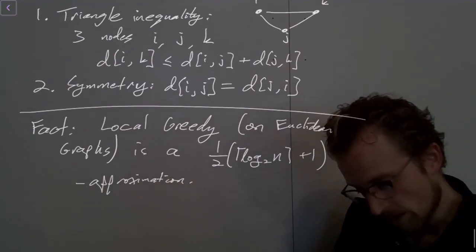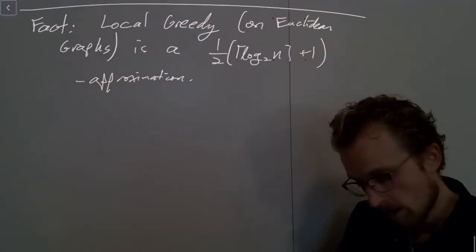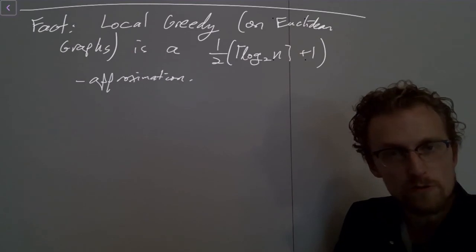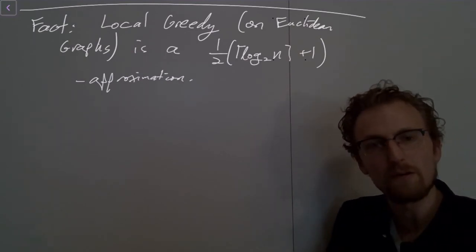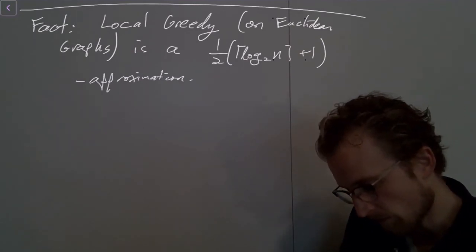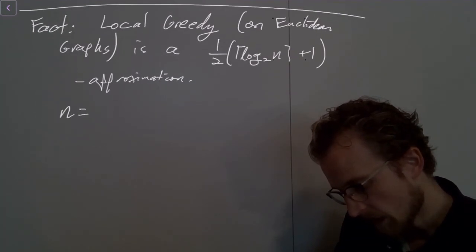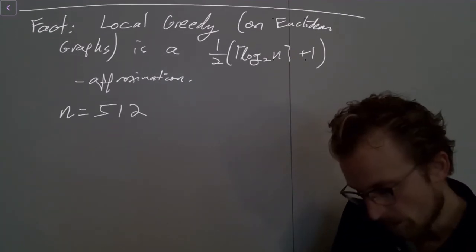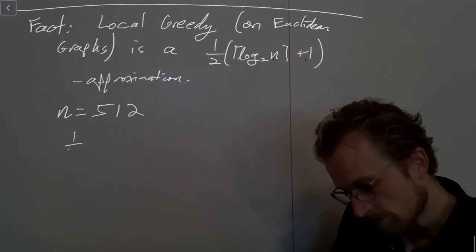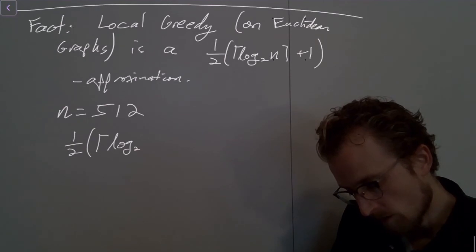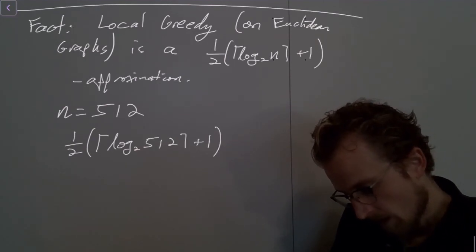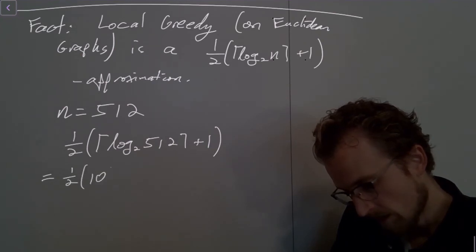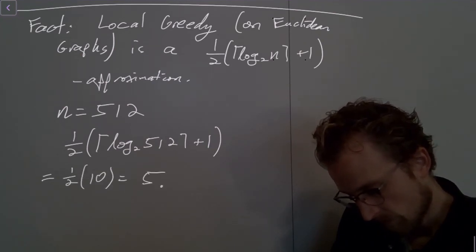So let's put this in context. Let's just plug in a number here. So suppose now we have 512 nodes. I'm picking 512 because it's a nice power of 2. So let's let n equal 512. Then what's our approximation ratio? Well, it's one-half times the ceiling of log base 2 of 512 plus 1, which is one-half times 10, which is 5.